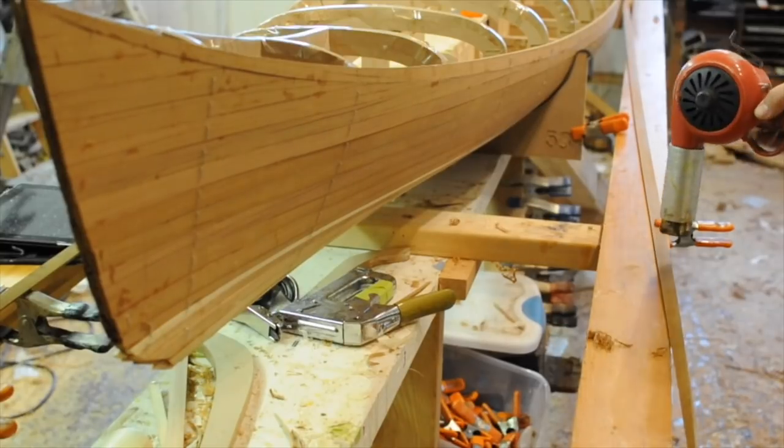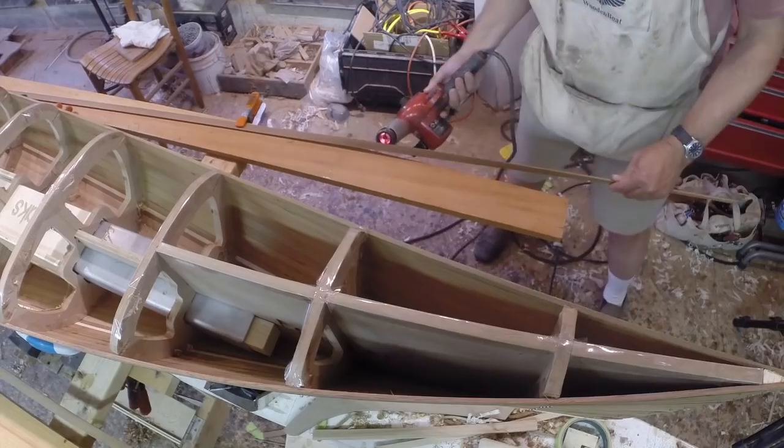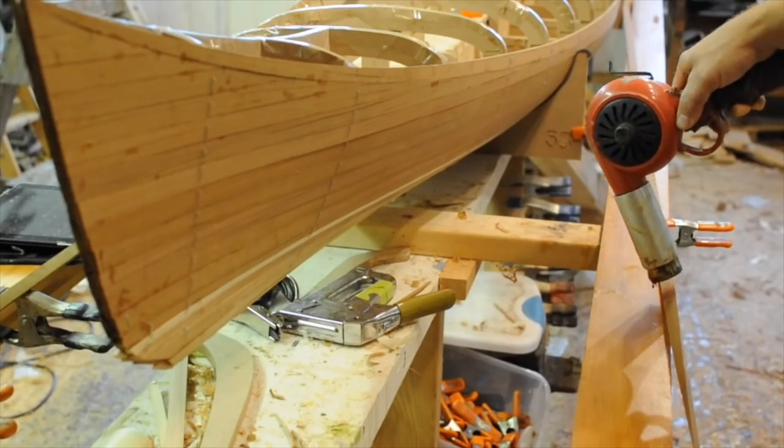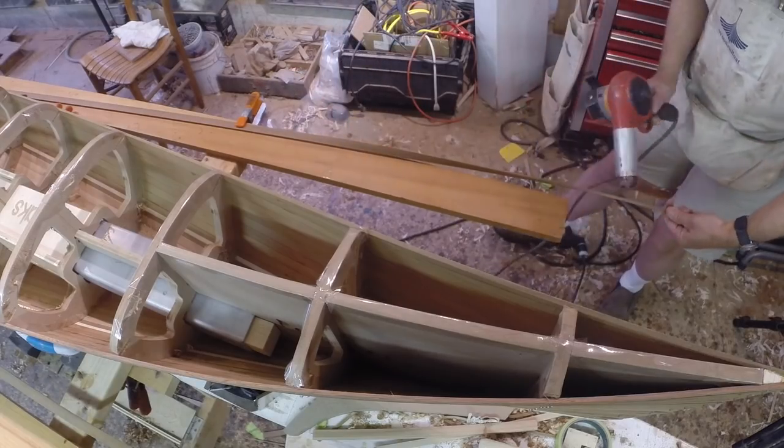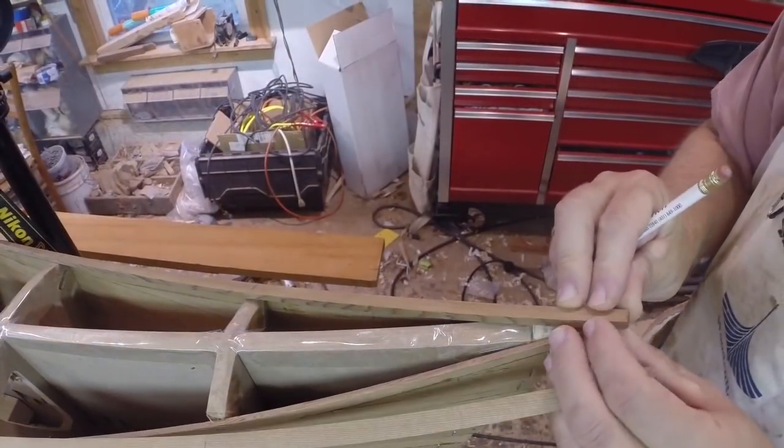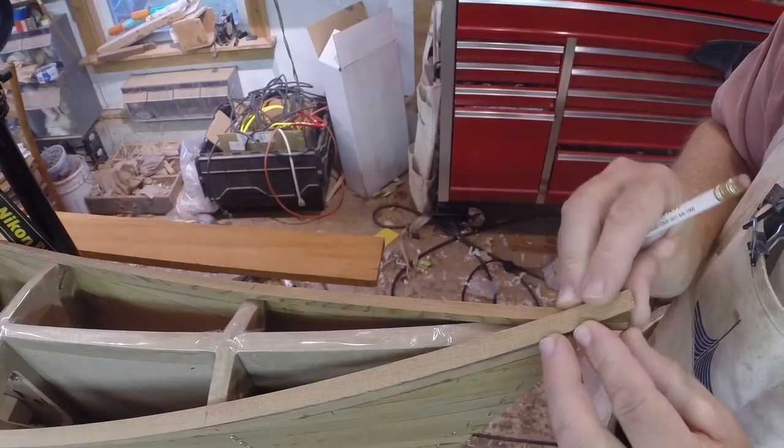The strip twists sharply from almost flattened at the bow to nearly vertical at form 4. Heating the strip softens the wood, allowing me to lock in the proper twist before the strip is installed on the forms. With both shear strips fitted and twisted on each side, I need to join them together.